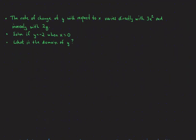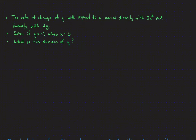The next one: again the rate of change of y with respect to x, so that's going to be dy/dx. Here it varies directly with 3x squared and inversely with 2y. Varies directly with means it's going to be times the 3x squared, inversely with 2y means it'll be divided by 2y. So dy/dx equals k times 3x squared, divided by 2y.